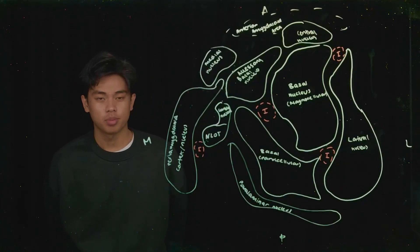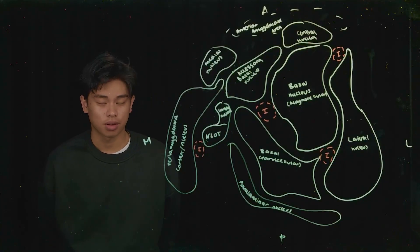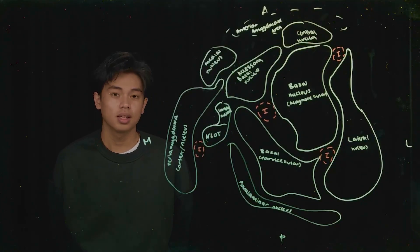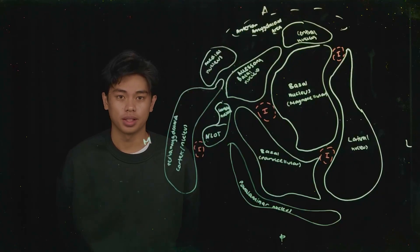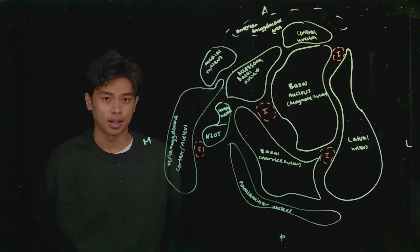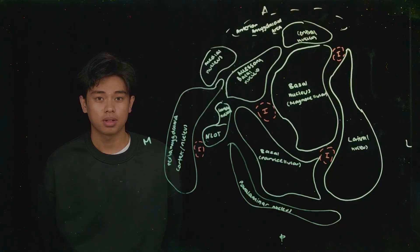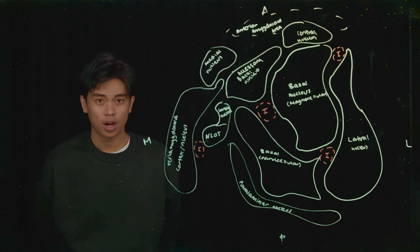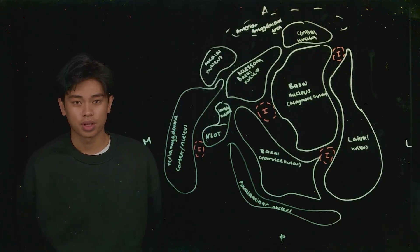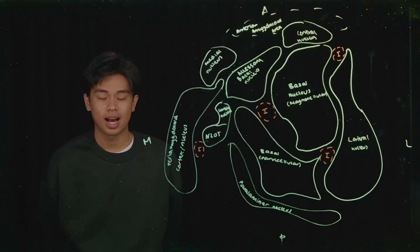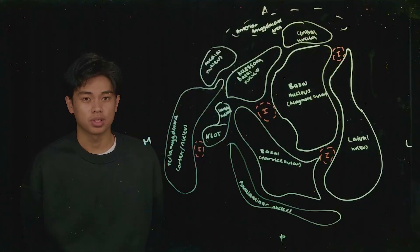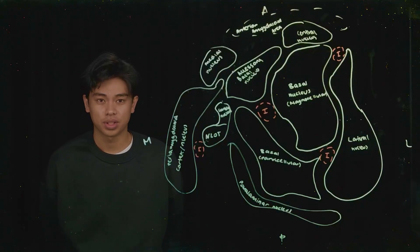Hello everyone. Today I will be talking about the functions of the amygdala and their respective nuclei. The amygdala is a structure of the brain that is part of the limbic system. It derives from the Greek word 'amygdale' which means almond, because of its almond shape.